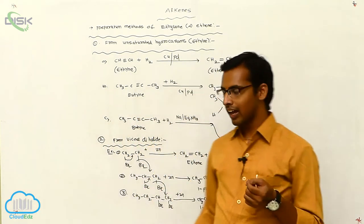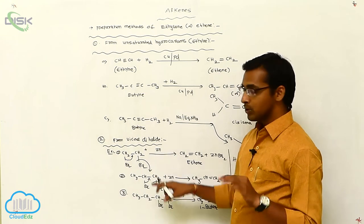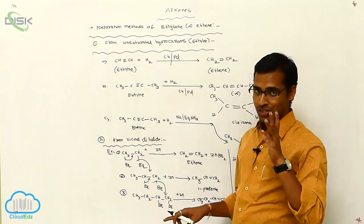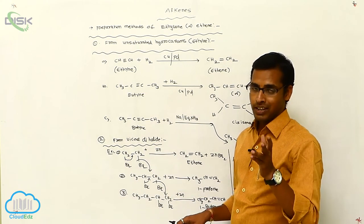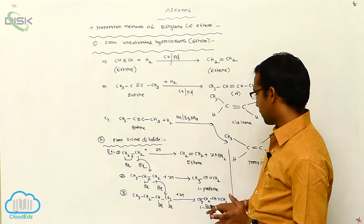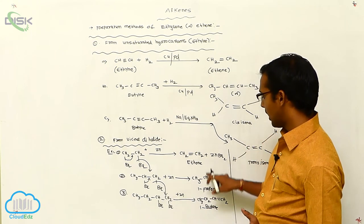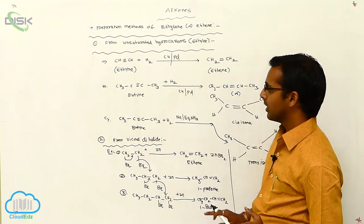So, vicinal dihalides undergo dehalogenation in the presence of zinc metal to produce alkenes. This is your second method.